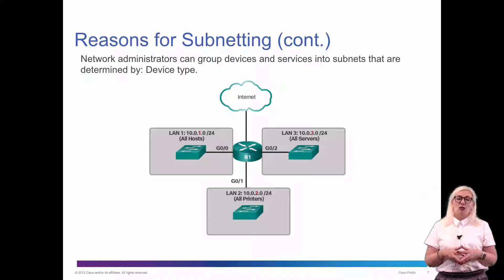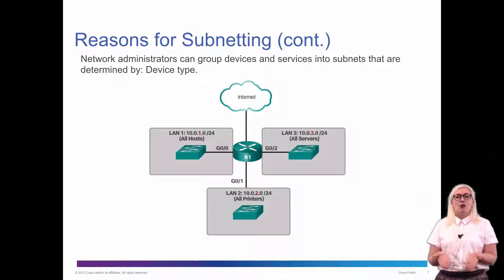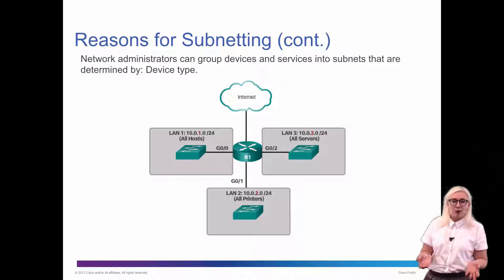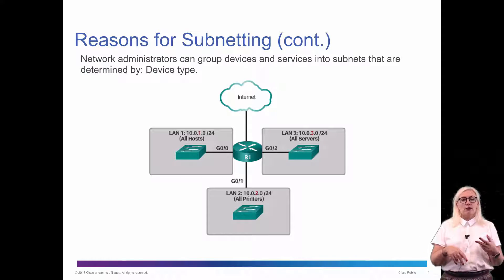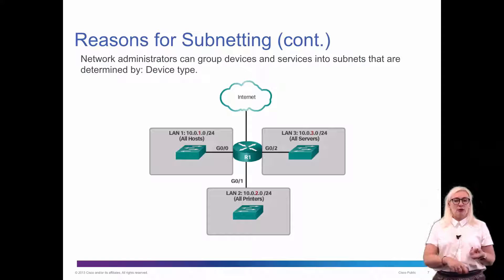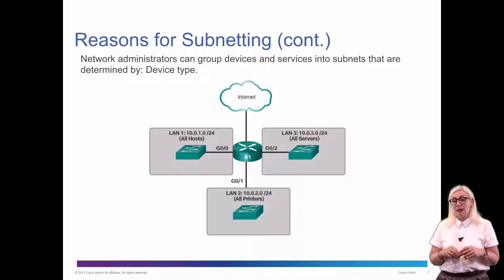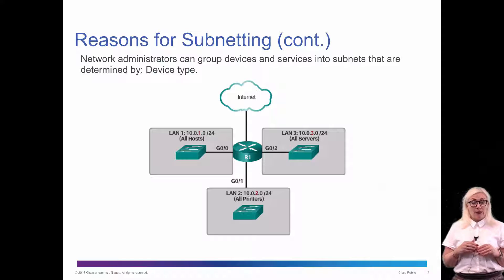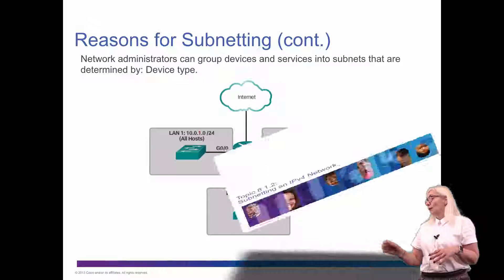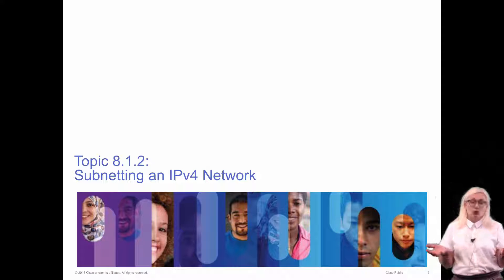Many times we do a little bit of each. For instance, at our school we have all printers in one subnet, the students in another subnet, and the teachers and faculty members in another subnet. We also have a subnet for our wireless network because it has special functions. So normally we take a combination of all these approaches.